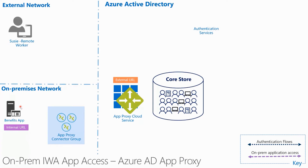Let's say that we have a benefits intranet application that we built back in 2003 with ASP.NET in our on-premises data center in North America. And Susie over here is working from home trying to access that application. Since the app is integrated with Azure AD, Susie can go to the My Apps portal, see it from there, and click the benefits icon.